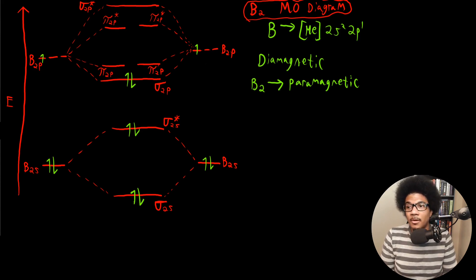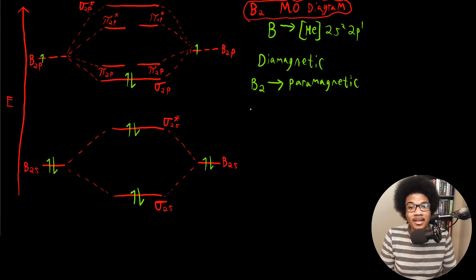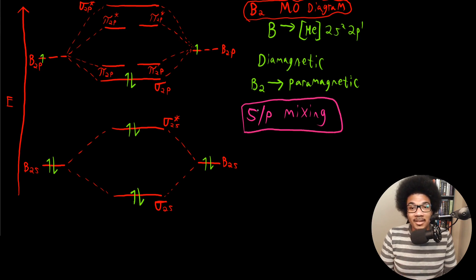So what we'll have here in the case of B2 and a couple of other molecules that I'll specify is a phenomenon known as SP mixing. So in this molecule, in B2, SP mixing occurs.